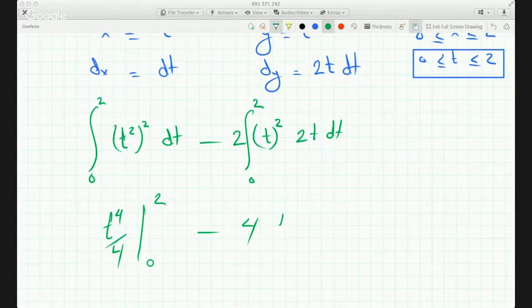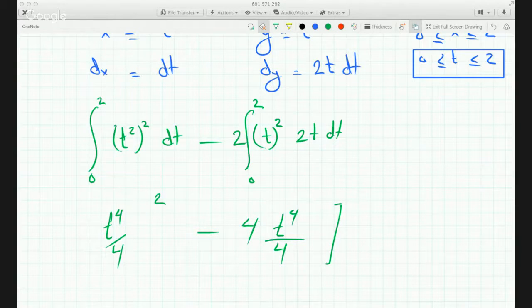This will get me t cubed, so this becomes t to the 4 over 4 from 0 to 2 as well. And since they both go from 0 to 2, I can make this whole thing go from 0 to 2.